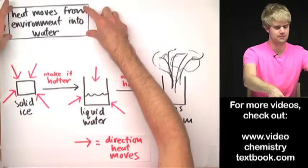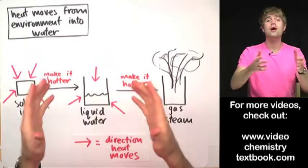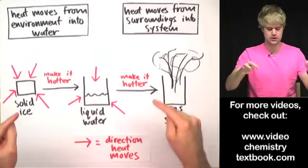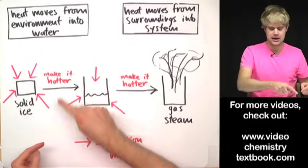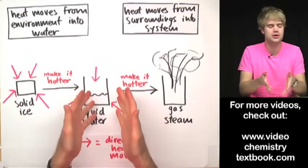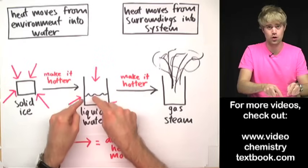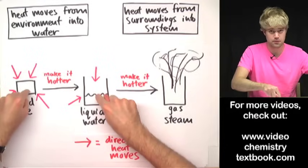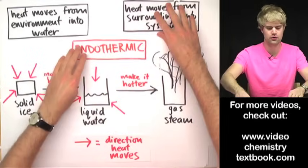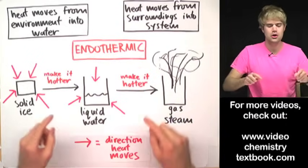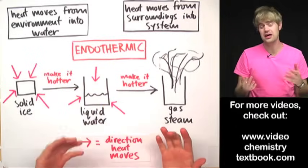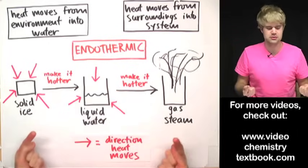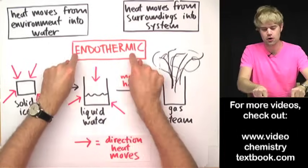Heat moves from the environment — or if we wanted to sound more scientific, from the surroundings, a fancy word for the environment — into the system. The system is just whatever we want to focus on; here the system is the ice, here the system is the liquid water. In all of these cases, when heat is moving from the surroundings into a system, we are talking about an endothermic process. You can remember this because 'in' sounds like 'in' — heat is moving into the system, into the water, into the ice: endothermic.